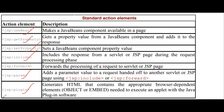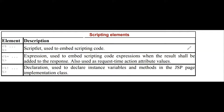The third kind of elements are scripting elements, which allow you to add small pieces of Java code in a JSP page. Like actions, they are also executed when the page is requested. The first scripting element is the scriptlet — used to embed scripting code between '<%' and '%>'. Then there is the expression tag, which allows you to put expressions. Finally, there is the declaration tag, which is used to declare variables and methods in the JSP page.